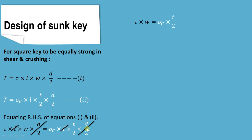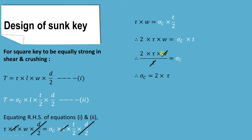After cancelling, we get tau × W = sigma_c × (T/2). Cross-multiplying by 2 gives 2 × tau × W = sigma_c × T, which rearranges to sigma_c = 2 × tau × (W/T). For a square key, width and thickness are the same, so W/T cancels to 1, giving sigma_c = 2 × tau. In other words, for a square key to be equally strong in shear as well as crushing, the crushing stress must be two times the shear stress.